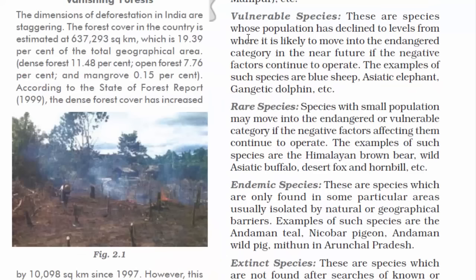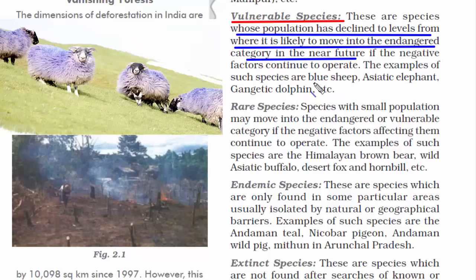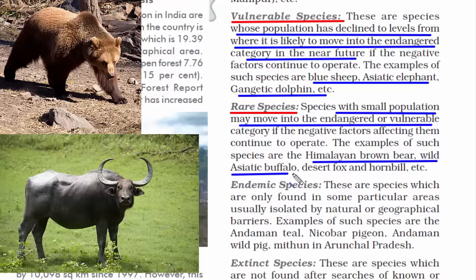The third classification is vulnerable species — those on the verge of getting endangered or extinct. Vulnerable is a step behind endangered, meaning they are approaching danger. Examples include blue sheep, Asiatic elephant, and Gangetic dolphin. The fourth classification is rare species, which have small populations. Because they are so few, they automatically fall under the categories of endangered and vulnerable as well. Examples are Himalayan brown bear, wild Asiatic buffalo, desert fox, and hornbill.